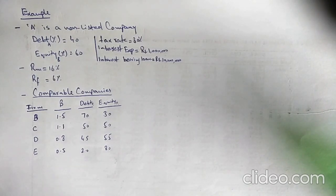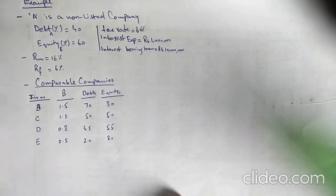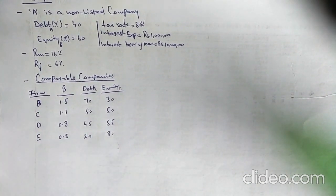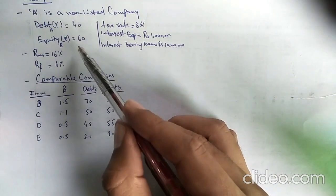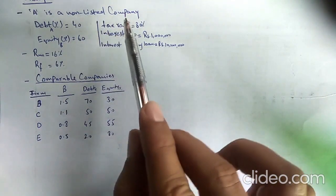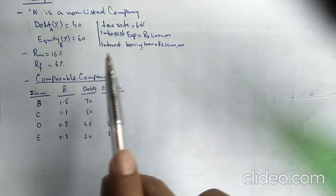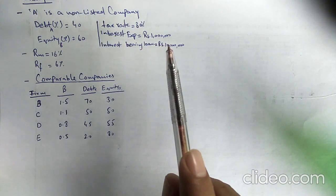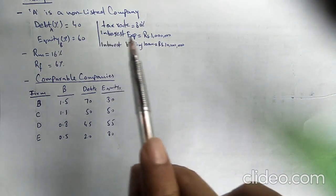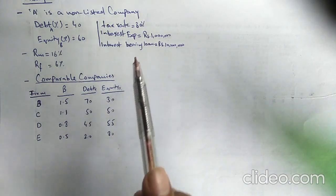Now we calculate the WACC for the non-listed company. Here I have one example. In this example, A is a non-listed company. The debt ratio of A is 40%, the equity ratio is 60%, and the tax rate is 30%. The interest expense of A company is 1 million, and the interest-bearing loan is 10 million, taken from the income statement and balance sheet respectively.